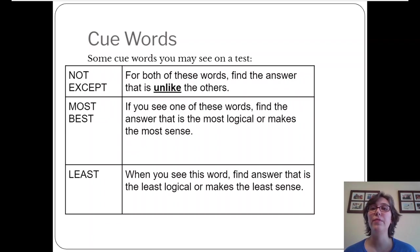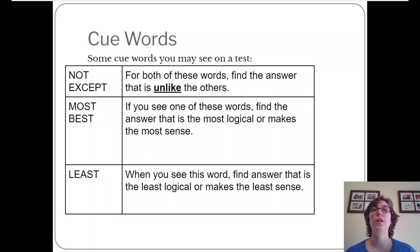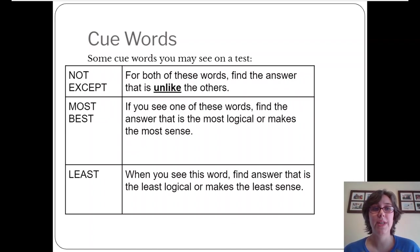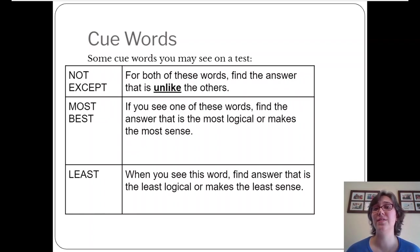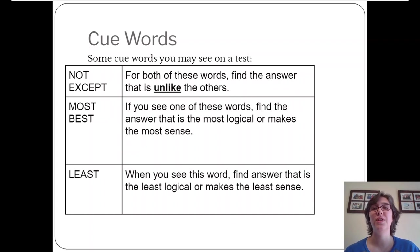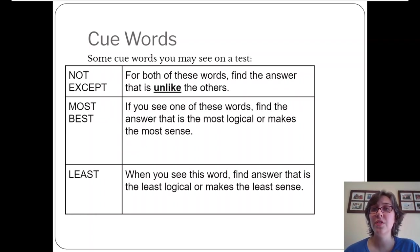Here are some examples: 'not' and 'except.' For both of these words, you're looking for the answer that's different. For example, 'all of the following is related to classical conditioning except' — you find the thing related to rewards and punishments. 'Most' or 'best' are almost like value judgments — find the answer that's most logical. These are harder because you have to find the maximal answer. 'Least' is the opposite — find the answer that makes the least sense. Looking for those negative cue words like 'not,' 'except,' and 'least' can help, because we're used to looking for the best answer, not the worst. Treat those as little flags that tell you to answer the question differently.